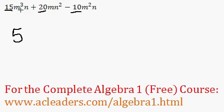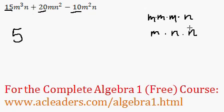And what about in terms of the variables? We have m cubed n, mn squared, and m squared n. Let me write all these down. So, m cubed n, we have m times m times m times n, mn squared would be m times n times n, and finally m squared n would be m times m times n.